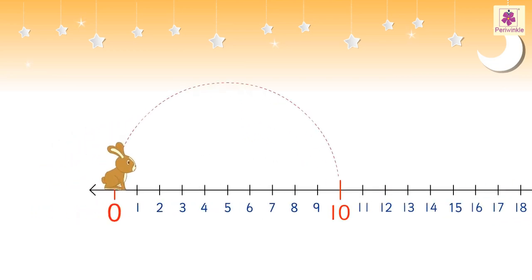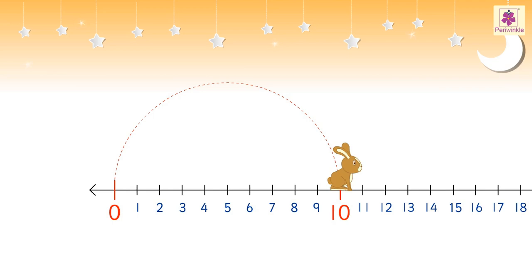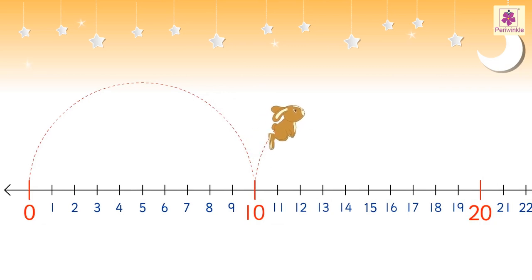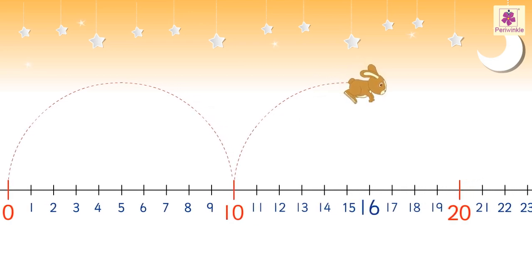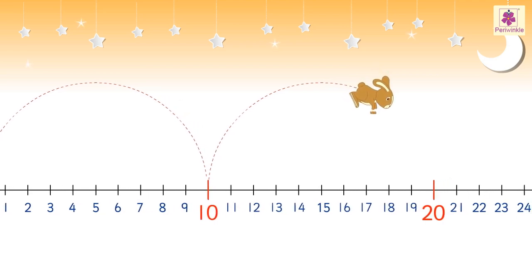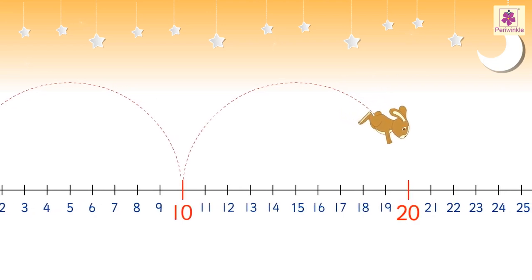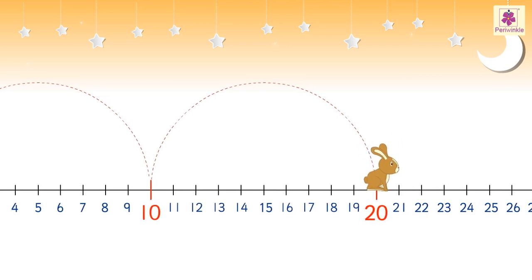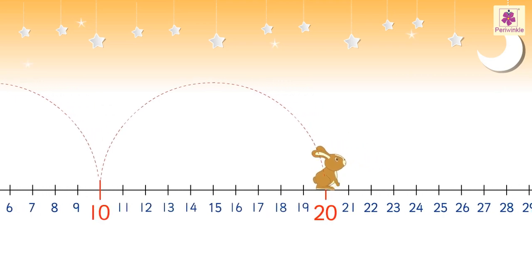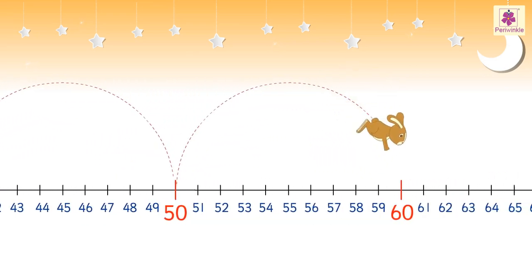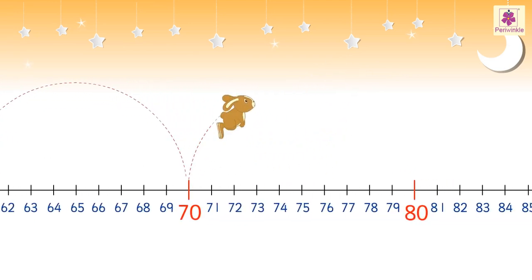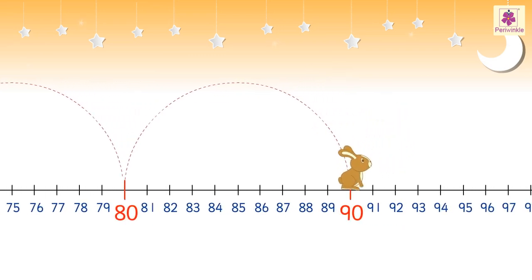Look at the rabbit — where is it? It is on number 10. Here it skips nine numbers: 11, 12, 13, 14, 15, 16, 17, 18, 19, and reaches number 20. Accordingly, it hops on to 30, 40, 50, 60, 70, 80, 90, 100.